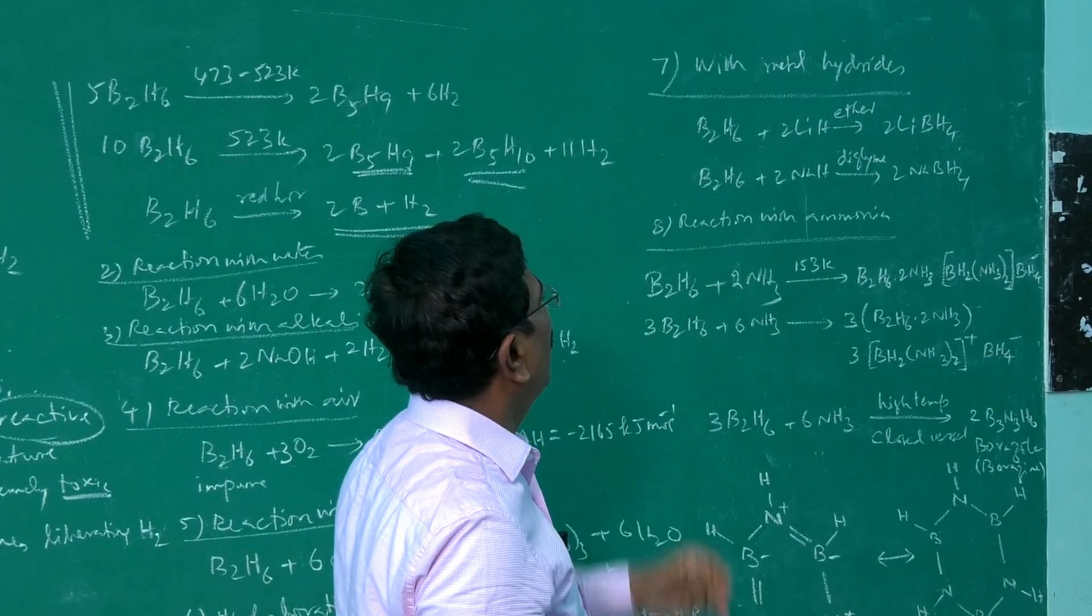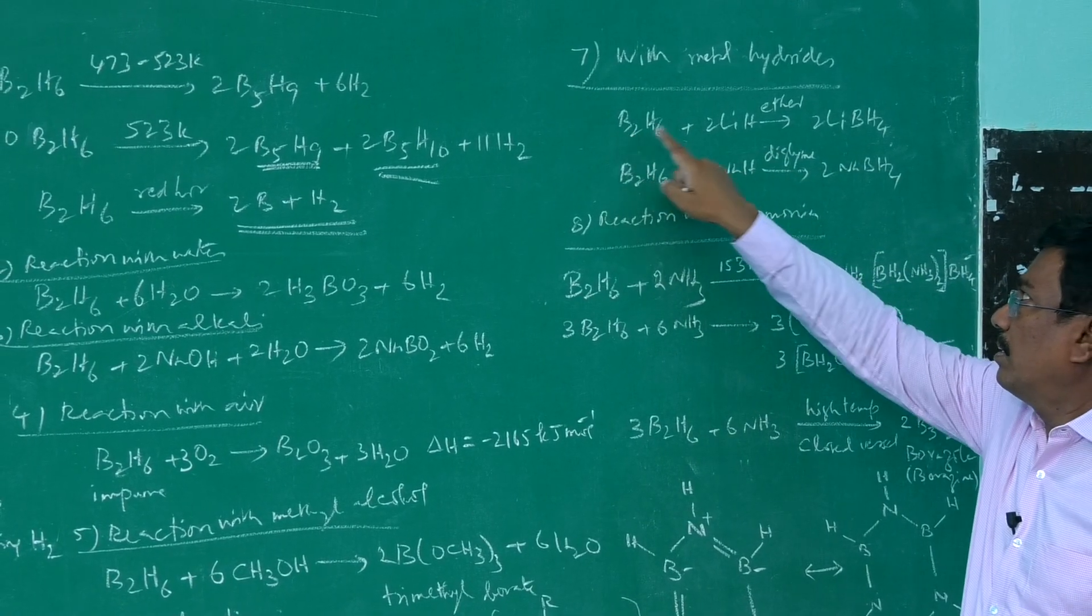Then reaction of diborane with lithium hydride, sodium, metallic hydride, we say ionic hydride with ether, in the presence of ether or diglyme. So lithium borohydride, two boron, therefore two LiBH4. Two sodium, two boron, therefore two NaBH4. To get four, six hydrogen here, two more hydrogen here, we get lithium borohydride and sodium borohydride.